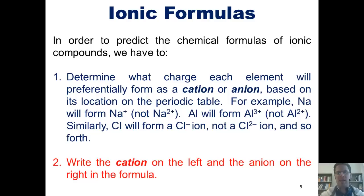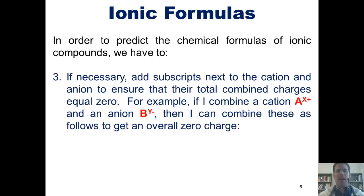Step two, write the cation on the left and the anion on the right in the formula. Step three, if necessary, add subscripts next to the cation and anion to ensure that their total combined charges equal zero. For example, if I combine a cation A with a charge of +x, and an anion B with a charge of -y, then I can combine them as follows to get an overall zero charge. Putting A with a +x charge together with B with a -y charge, I end up with a final formula of AyBx. In other words, the charge of B ends up being the subscript of A, and the charge on A ends up being the subscript of B, with the negatives and positives removed.